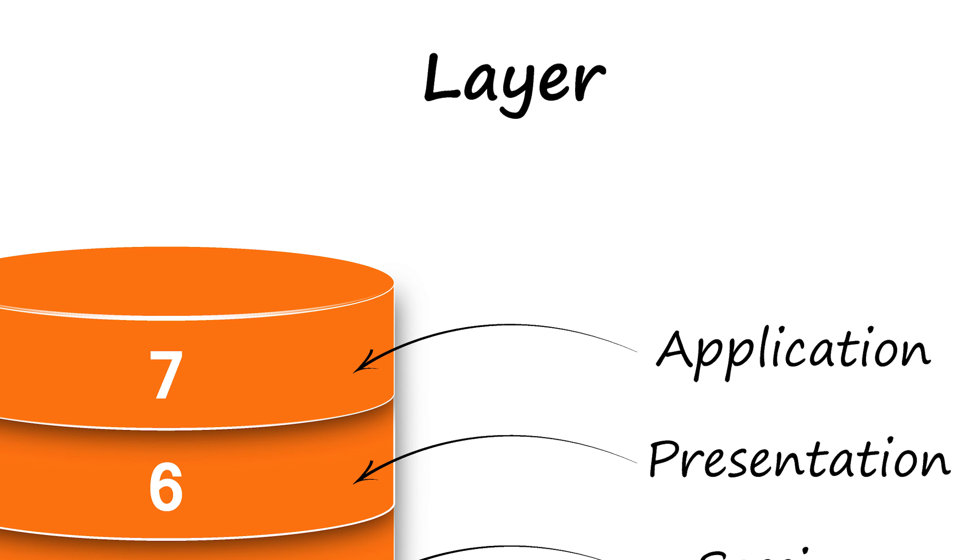Layer 6, the presentation layer, prepares data for the application layer. It defines how two devices should encode, encrypt, and compress data so it is received correctly on the other side. The presentation layer takes any data transmitted by the application layer and prepares it for transmission over the session layer.